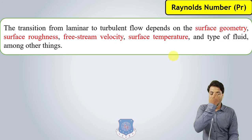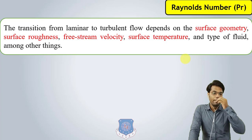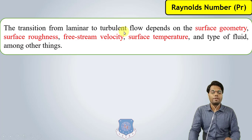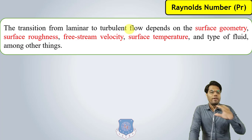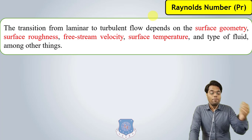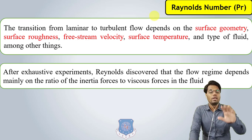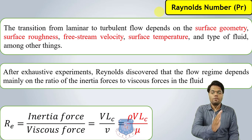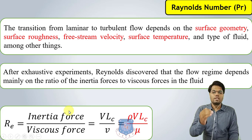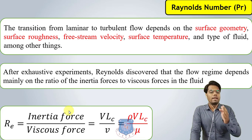The third number is the Reynolds number. We have already studied this in fluid mechanics: whenever there is flow of a fluid, it will be laminar, transitional, or turbulent flow. This depends on surface geometry, surface roughness, free-stream velocity, surface temperature, and type of fluid. From the value of the Reynolds number, we can predict the type of flow. Scientists discovered through experiment that the flow regime depends mainly on the ratio of inertia force to viscous force. Reynolds number is this ratio of inertia force to viscous force, and it determines whether the flow will be laminar, transitional, or turbulent.